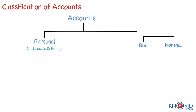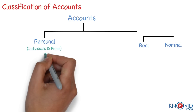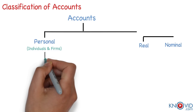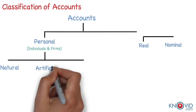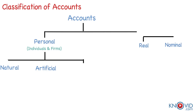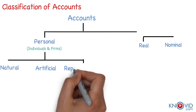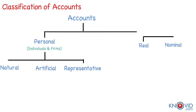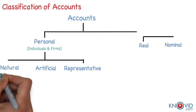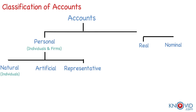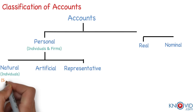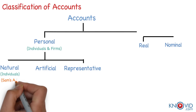Personal accounts are where transactions are related to individuals and firms. They are subdivided into natural, artificial, and representative accounts. Natural accounts are those of individuals like Sam's account, Neena's account, etc.